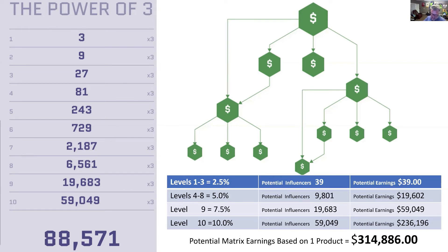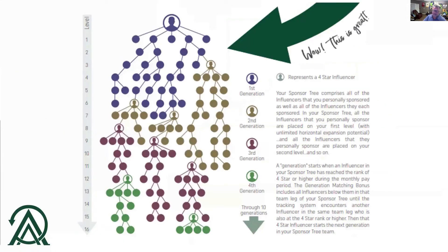Even though what I just talked about — hundreds of thousands of dollars per month, $300,000 to $500,000 per month — it's not the biggest part of the plan. This is probably a much bigger part of the plan, and this is the matching bonus. This is based on the sponsor tree, not the three-by structure.